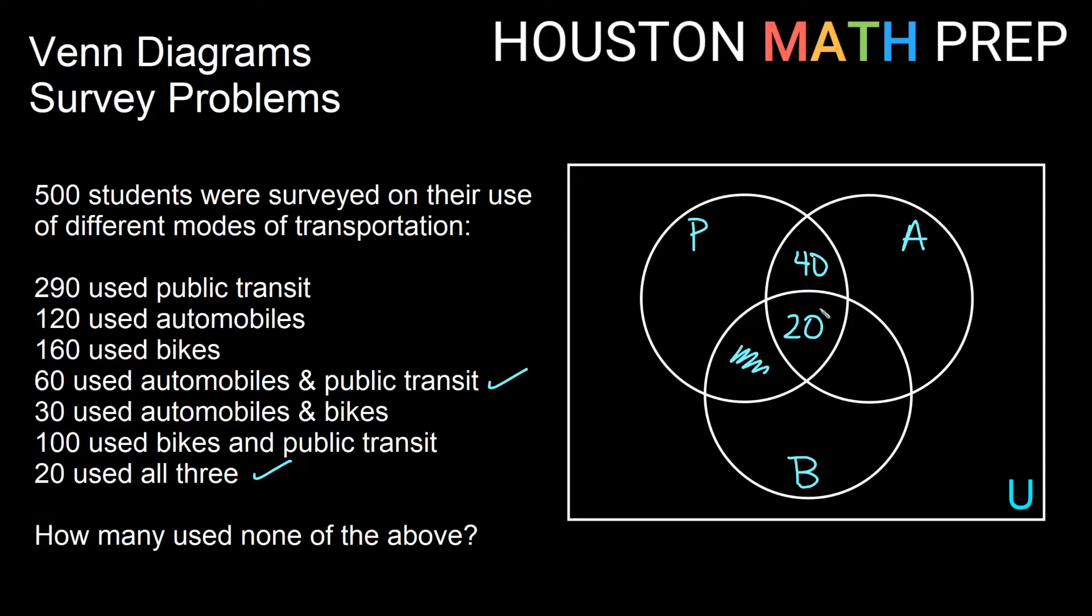So we're going to kind of work out from the center here. So let's figure out what it would take to figure out this region here. Now if we look at that region, it's in the overlap, the intersection of the P and the B circle, right? So that will be information about public transit and bikes. So I look for that in my list. Here I have 100 used bikes and public transit. So that tells me that in this shared region of P and B, I must have a total of 100. I already have 20 here. So 20 plus what will give me 100 total? Our answer is 80. And now I've used this 100 statement here. We can do a similar thing to find out the rest of the overlap between the A and the B circle. That will be automobile and bike information. So we have 30 total people in the automobile and bike overlap. So 20 here and something here giving me a total of 30. That means I will need 10 more people to go in there. And so I have a total of 30 that used both automobiles and bikes.